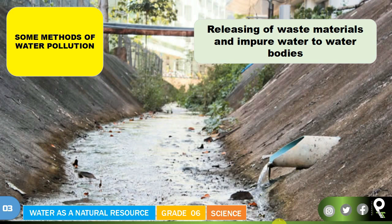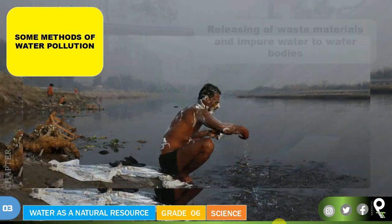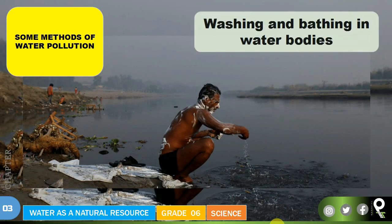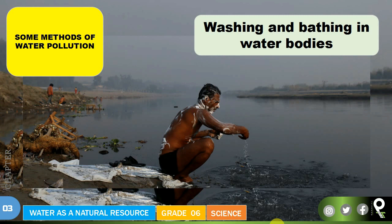Another cause is the releasing of waste materials and impure water to water bodies by people. Most people living in metropolitan cities make this mistake — they just release waste and impure material into streams, the sea, or anywhere. Also, see what this gentleman is doing — washing and bathing in water bodies. When so many people do this, the shampoo, soap, and chemicals they use get added to the river, polluting it.